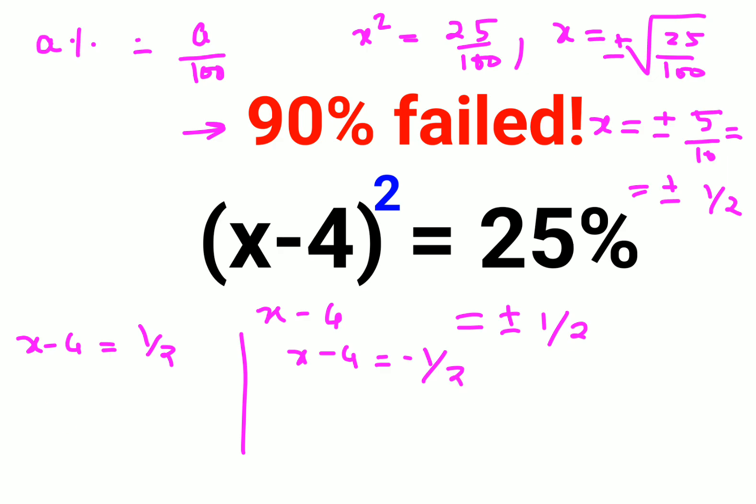So this becomes x equals, we'll take the negative 4 to the other side, you get positive 4. So 1 upon 2 plus 4 gets you 9 upon 2. Or if you want it in decimal, the answer is 9 upon 2 or 4.5.